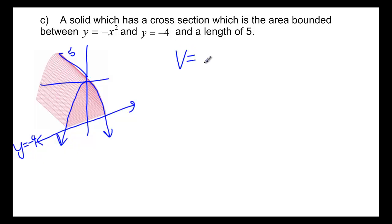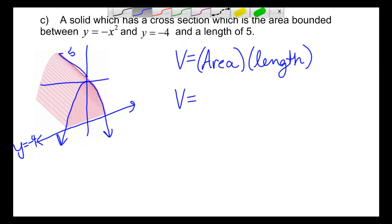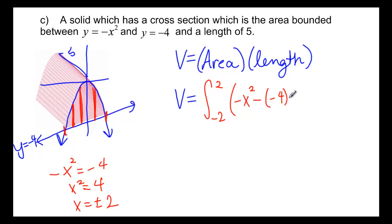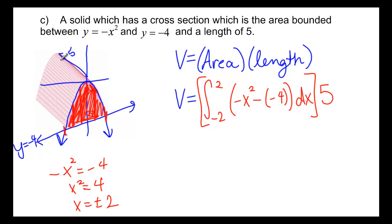We're going to use volume equals area of the base times the length. To find the area of that base, we use an integral with vertical rectangles, from the intersection points. Setting negative x² = negative 4 gives x = ±2. So the area is the integral from negative 2 to 2 of (negative x² minus negative 4) dx. Then we multiply that whole answer by the length of 5 to get the volume of the 3D solid.